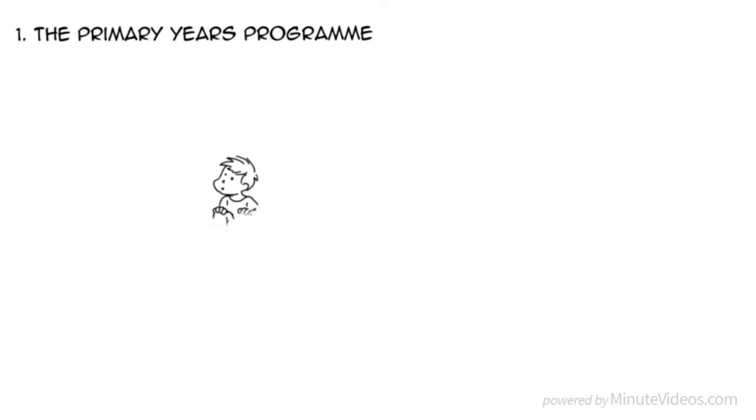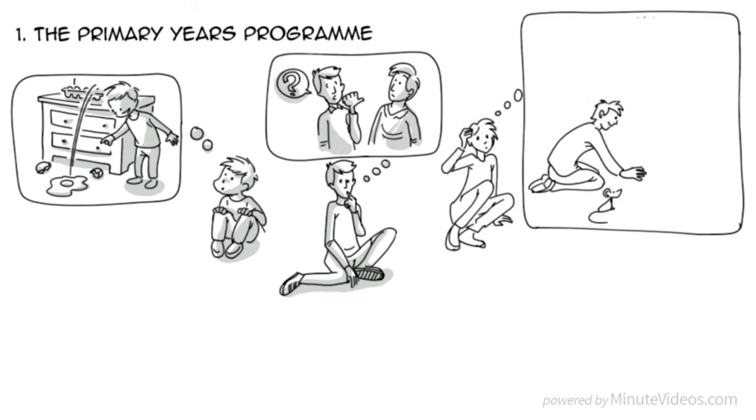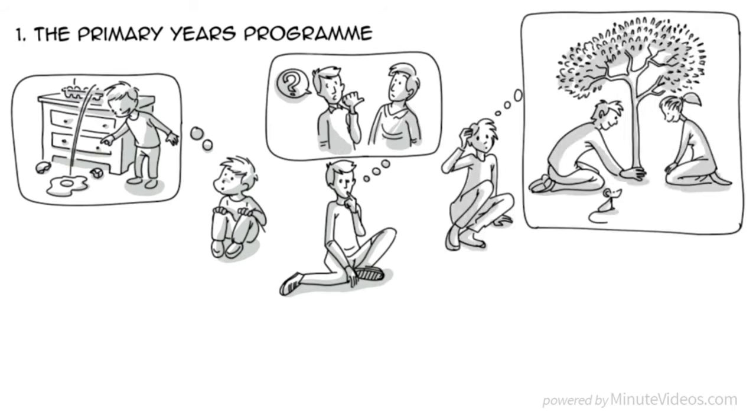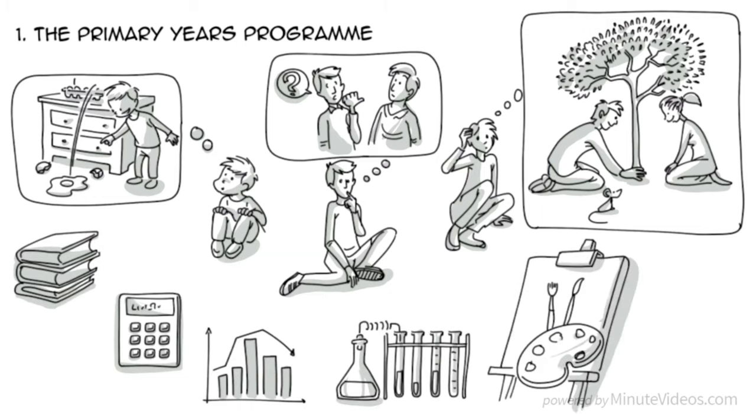One, the Primary Years Program. This is for kids between 3 to 12 and is designed to encourage children to ask some of life's big questions: How does the world work? Who am I? How can we build a sustainable society? In addition, there are six classic subject areas such as language, maths, social studies, science, art, and physical exercise.